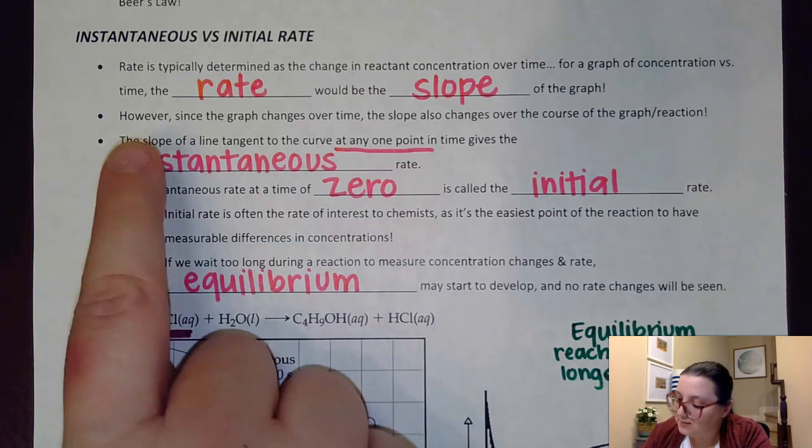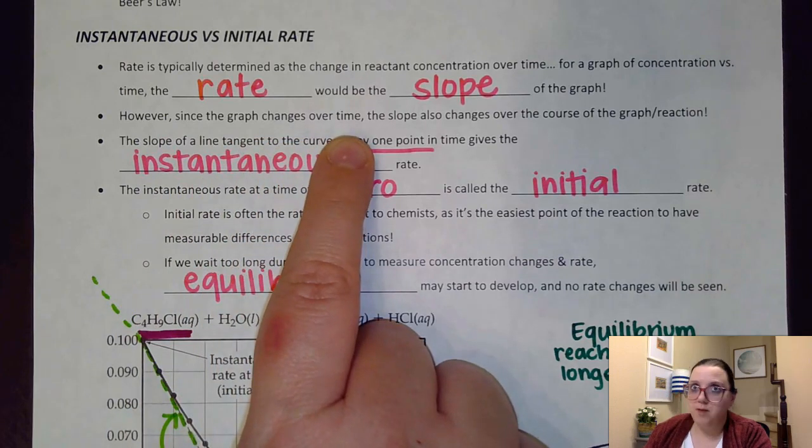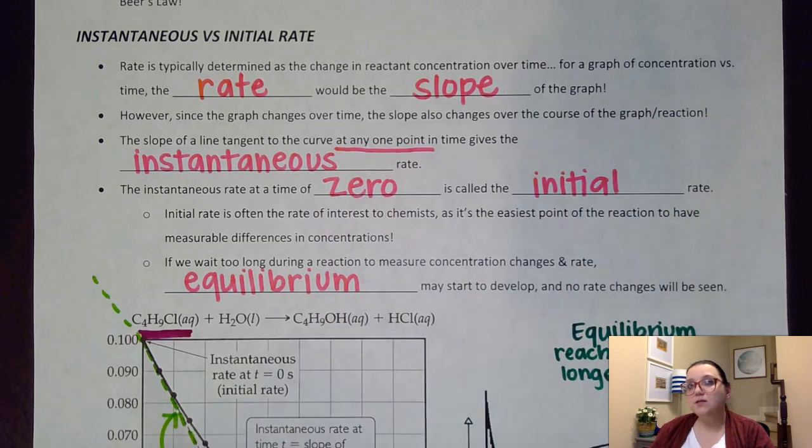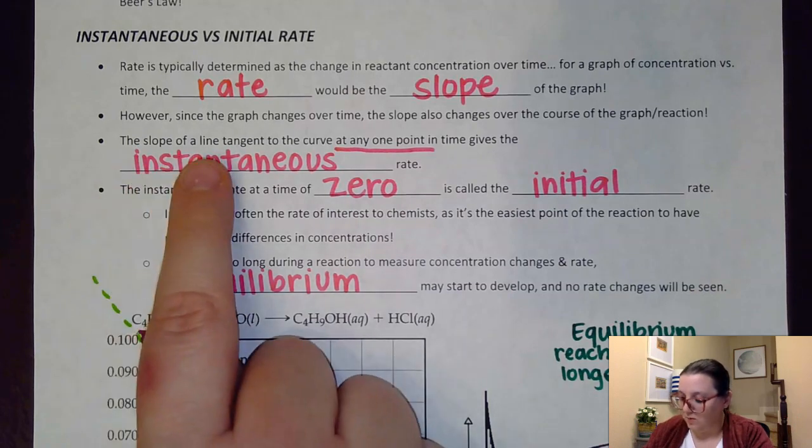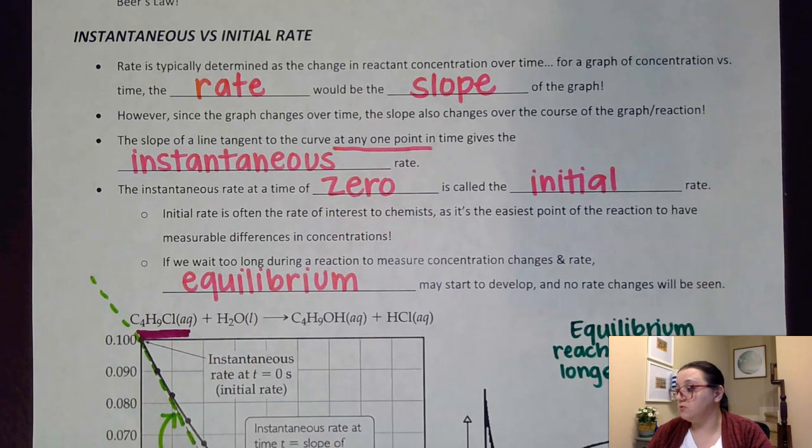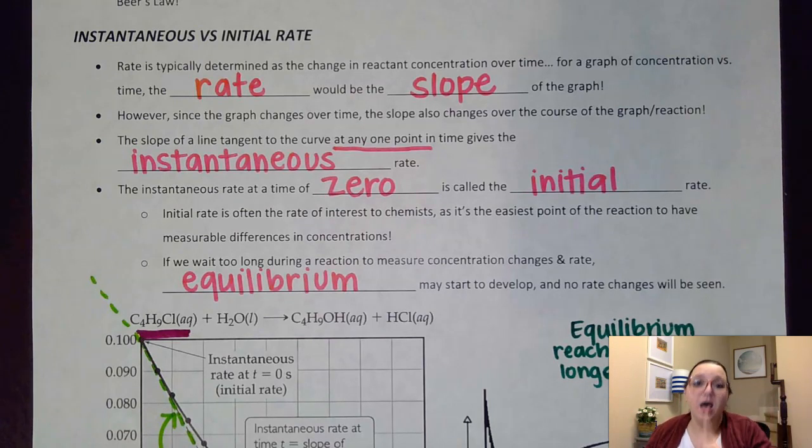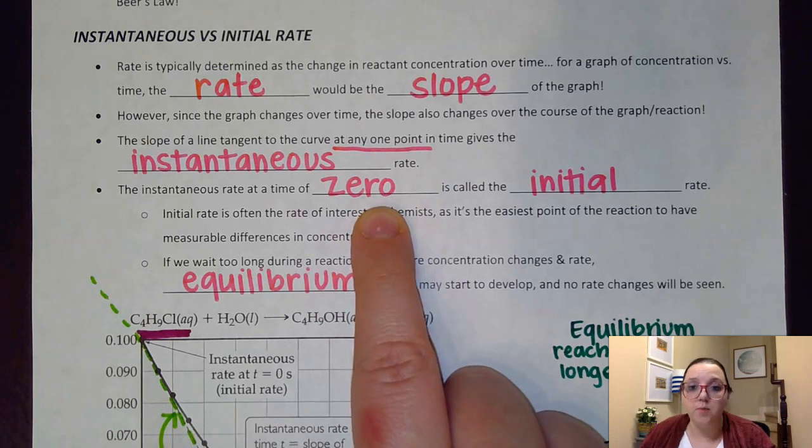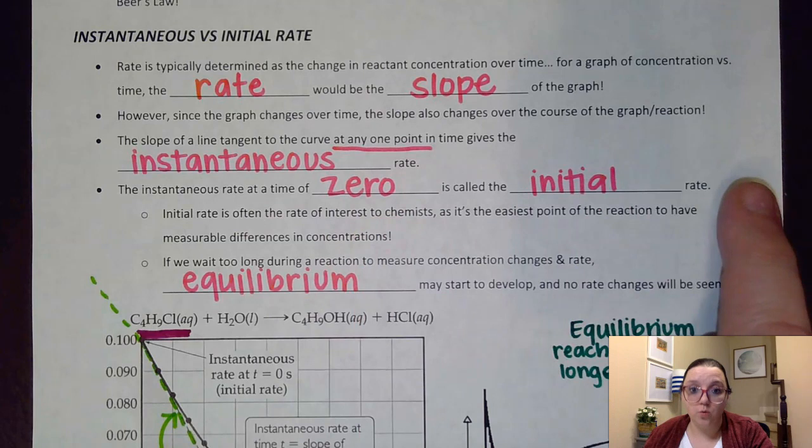Now it says here, however, since the graph changes over time, remember, it's a lot more sloped at the beginning than it is at the end. Then that means the slope also changes over the course of the graph or reaction. So we have some kind of specific rates that we can talk about. First off, the slope of a line tangent to the curve at any given point is called instantaneous rate. So I could take an instantaneous rate at 10 seconds, at 20 seconds, at 30 seconds. I could take an instantaneous rate wherever. However, if I take the instantaneous rate at a time of zero, right at the beginning, when everything is changing by a whole bunch, that is what is called the initial rate.